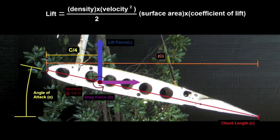The amount of lift generated can be found mathematically using the lift equation. The amount of lift is found by multiplying one half of the air density times the square of the flow velocity times the surface area times the coefficient of lift.